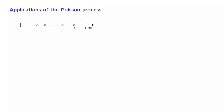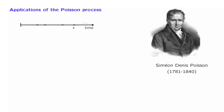In such situations, the number of arrivals will often be described by a certain distribution called the Poisson distribution, which is named after the person who first studied this situation — a famous French mathematician by the name of Simeon Denis Poisson.